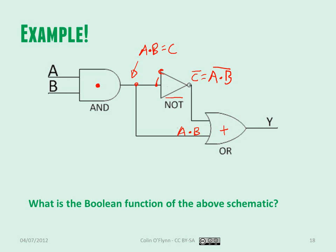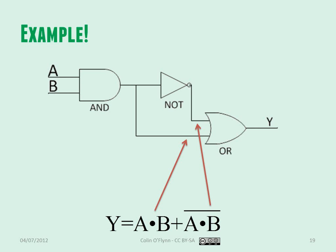Finally, we have an OR gate. At this point C, which is the same as A·B, the output is C OR NOT-C, and you simply substitute the values found — that's how you write the final Boolean output. Likewise, if you're given just the function, you can derive the schematic diagram by doing the opposite: given Y equals A·B, you draw the AND gate and work through the whole diagram.